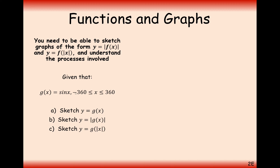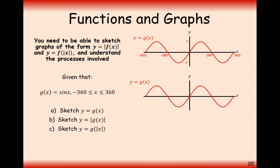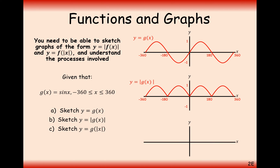Now let's apply these rules to the sine graph. The original sine graph looks like a standard sine wave. For the modulus of sine x — modulus on the outside — we reflect the bottom up to the top. All y-coordinates become positive: if they were already positive keep them, if they were negative make them positive. For f of modulus x — modulus inside the brackets — we take a copy of the right-hand side exactly as it is and mirror-reflect it onto the left-hand side.